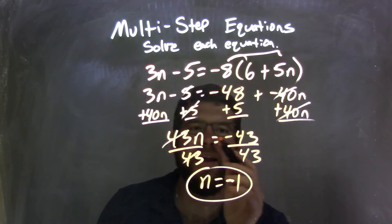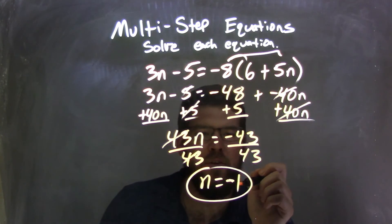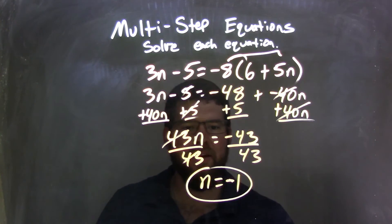And so I have 43n equals negative 43. I divide by 43 on both sides, leaving me with n by itself equals negative 43 divided by 43, which is negative 1. So my final answer is n equals negative 1.